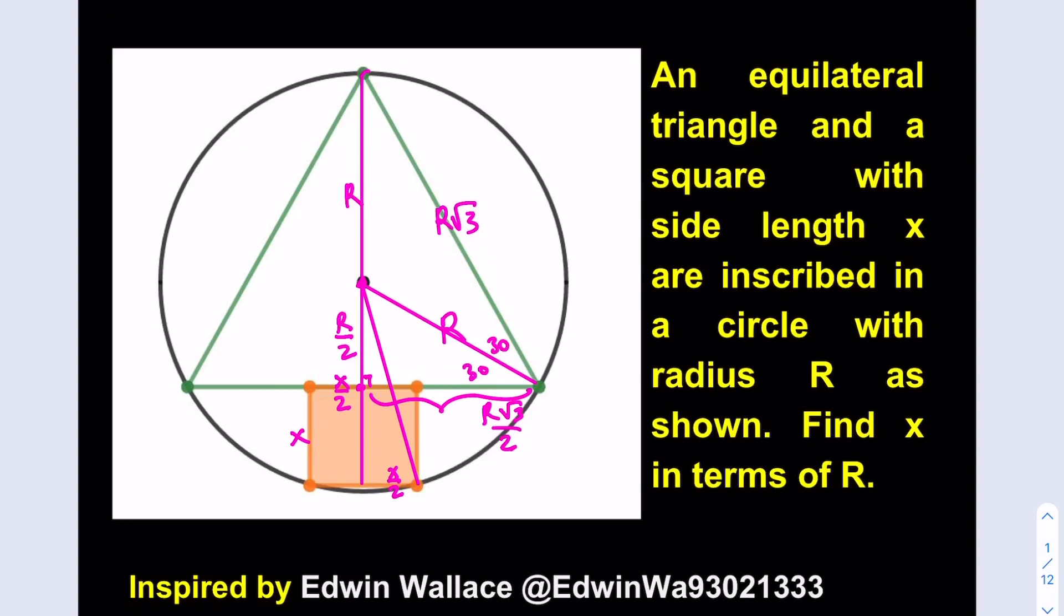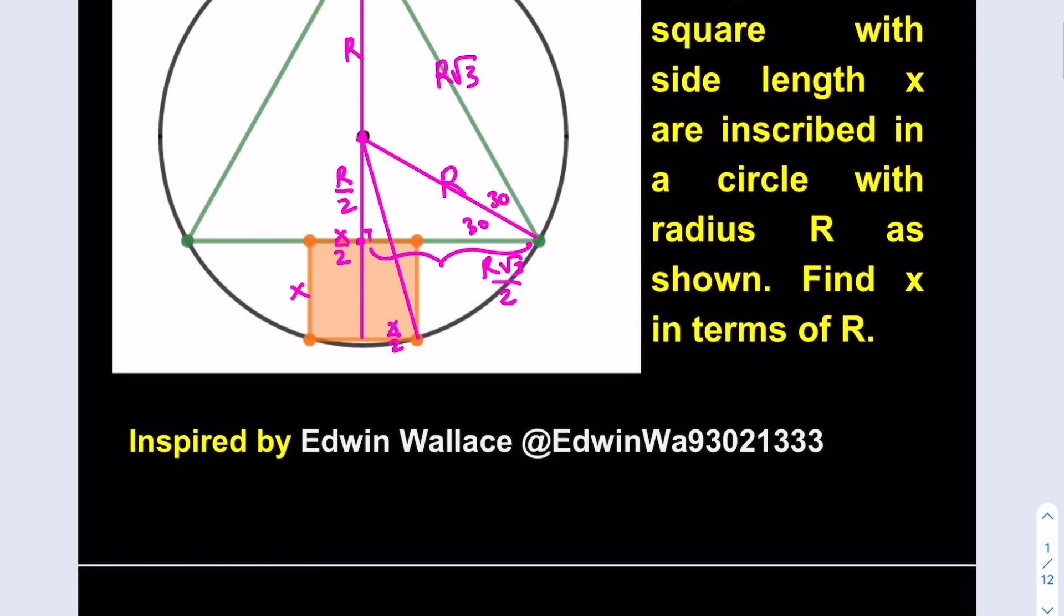Now what do we need? We're looking for x in terms of r so let's write down the relationship. Actually, we don't really need the side length but we just needed this length here r over 2. Let's proceed from here.